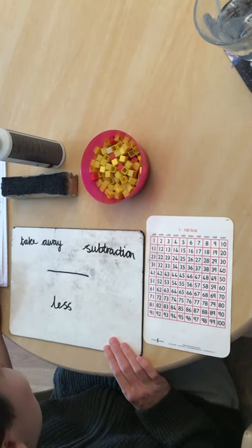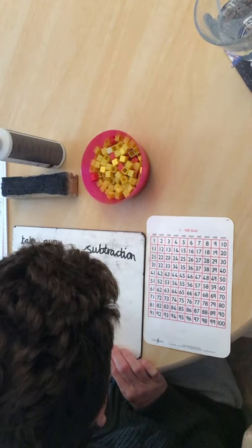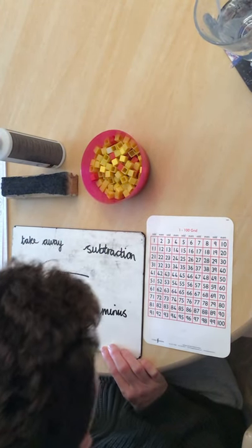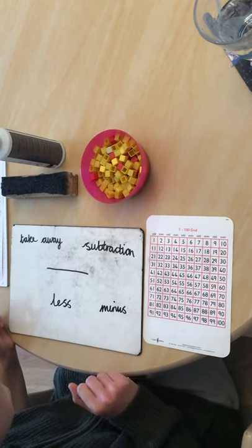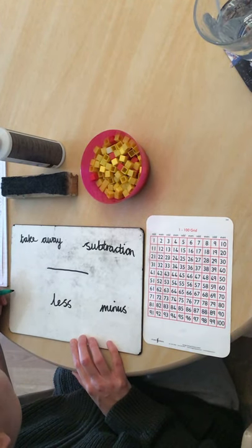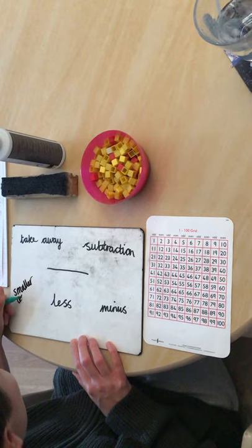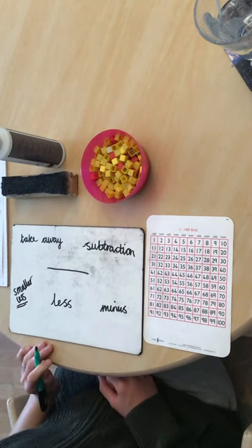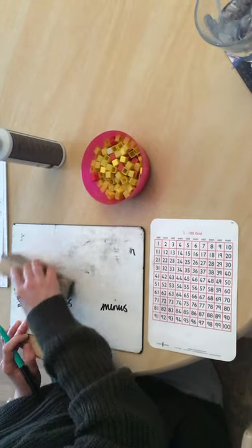And the other one that I thought of, that you might hear sometimes, is minus. What is 12 minus 4? Okay, so we can call it minus. And you're right, when we do take away, the answer always gets smaller. We always have less, okay. Well done children. Well done for remembering all of that information.